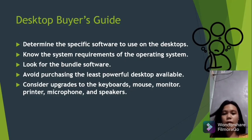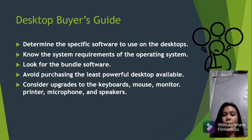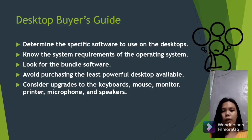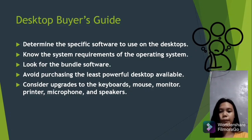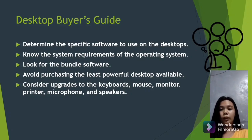Desktop buyer's guide tips: determine the specific software to use; know the system requirements of the operating system; look for bundled software; avoid purchasing the least powerful desktop available; consider upgrades to the keyboard, mouse, monitor, printer, microphone, and speakers. Because we always use the desktop, we need to keep it updated to avoid problems.